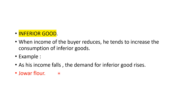Another example is of refined oil. If a person is eating desi ghee one time and refined oil the other time, but now his income drops — with the fallen income he cannot afford desi ghee. So both times he will be eating the refined. The demand for refined will increase even if his income has fallen. This is the case of inferior goods.